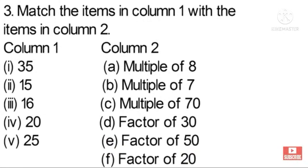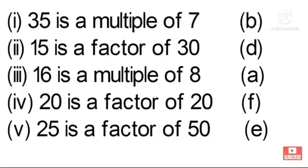Here is given column 1 and column 2. Column 1: 35, 15, 16, 20, and 25. We have to match them with column 2. The explanation of column 2 is given: multiple of 8, multiple of 7, multiple of 70, factor of 30, factor of 50, factor of 20. So we have to find out these numbers are the multiples of the numbers and whose are the factors of the numbers. Let's see.